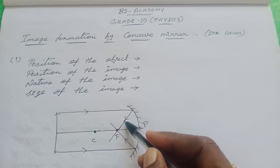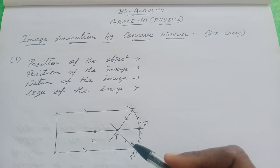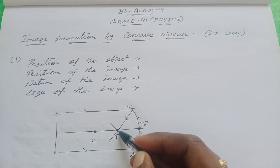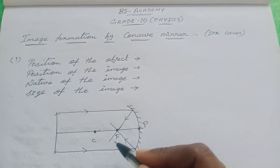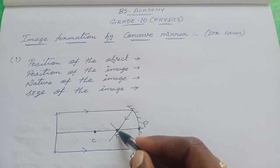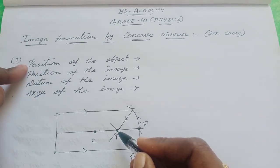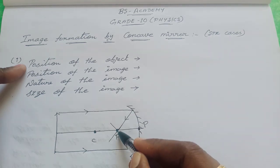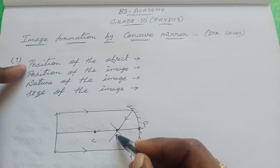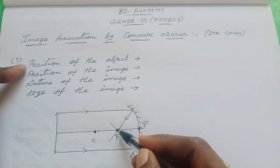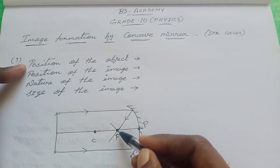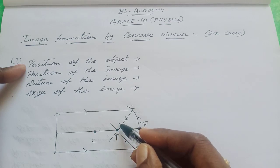This is one reflected ray and this is another reflected ray. These two reflected rays are meeting at a particular point. Wherever the two reflected rays meet, there the image is going to be formed. In this first case, the reflected rays are meeting at this point, which is the principal focus. So here only we are going to get the image. We can place the white screen at this point to obtain the image.